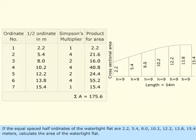If the equal spaced half-ordinates of the watertight flat are 2.2, 5.4, 8.0, 10.2, 12.2, 13.8, 15.4 meters, calculate the area of the watertight flat.